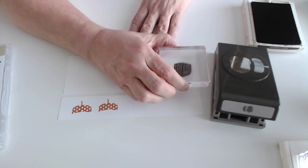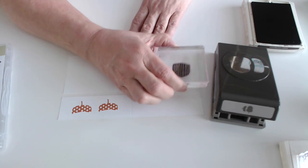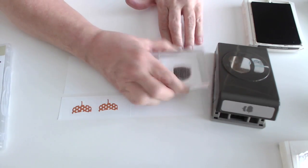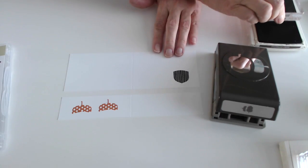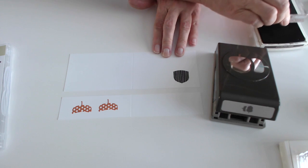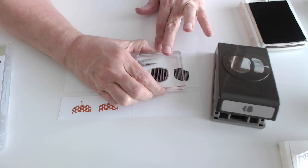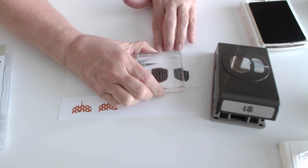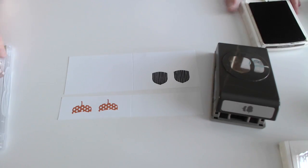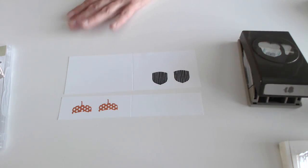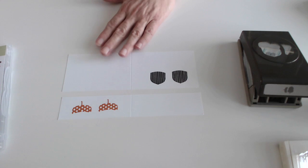I'm going to do this along the bottom edge. And when you stamp, it's just always good to remember, just go straight down and straight up. You never want to wiggle, jiggle, or go on an angle. You want to go straight down with your stamp and straight up.